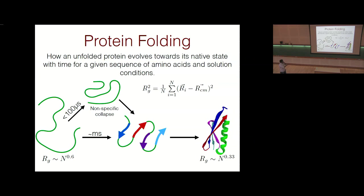In FRET, you attach a donor and an acceptor at the two ends of the protein and measure the energy transfer efficiency between them. If the protein is a random coil, the energy transfer efficiency is low, but if it's compacted the efficiency goes up. From changes in efficiency, the protein dimensions are inferred. In SAXS, using the standard Guinier analysis you can get the radius of gyration.